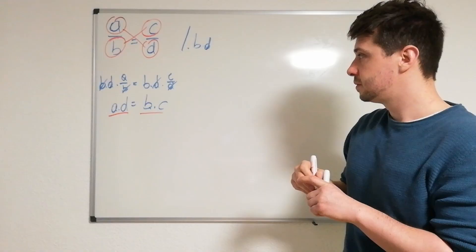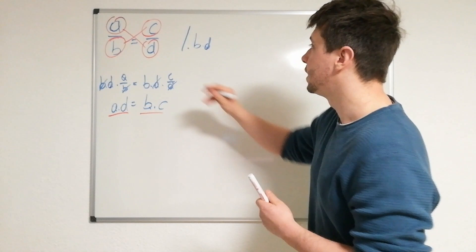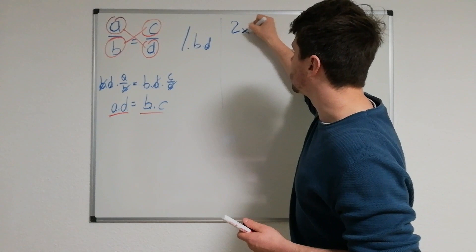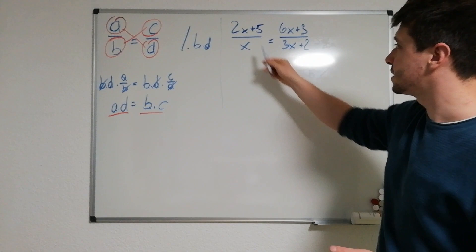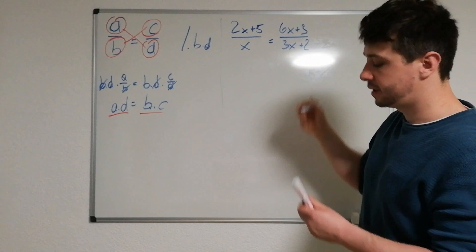So instead of a, b, c, d, we can just put in 2x plus 5 through x equals like 6x plus 3 through 3x plus 2. Seriously, it doesn't really matter what you write there. You just need fraction equals fraction, and then you can just go ahead and do the crosswise multiplication.